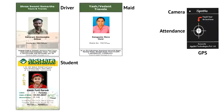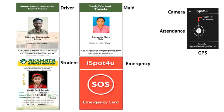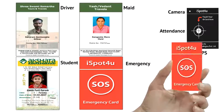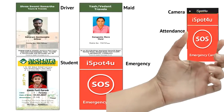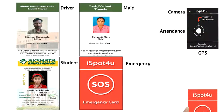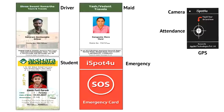There are situations when we need to get notification of an emergency. iSpot4U provides a red card for SOS or emergency reporting for every bus. When the red card is tapped on the device, it sends an emergency notification or SOS to pre-registered numbers.